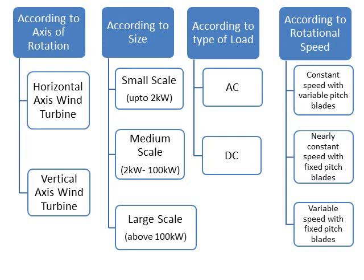According to type of load, there are two types: AC and DC. AC generates AC power and DC generates DC power. According to rotational speed, there are three classifications: first is constant speed with variable pitch blades, second is nearly constant speed with fixed pitch blades.